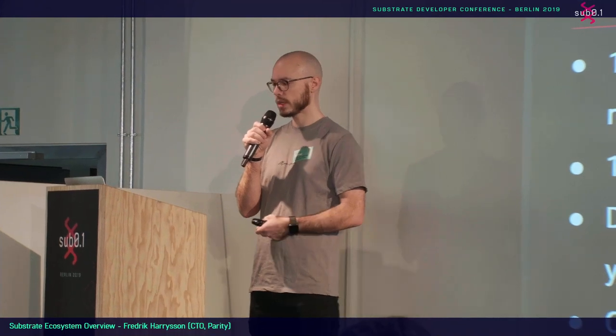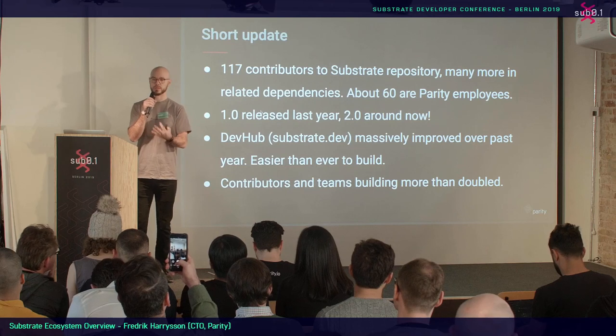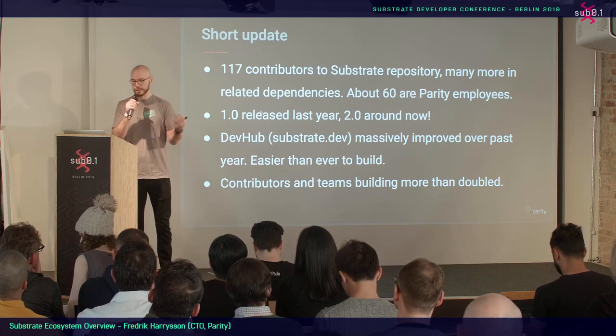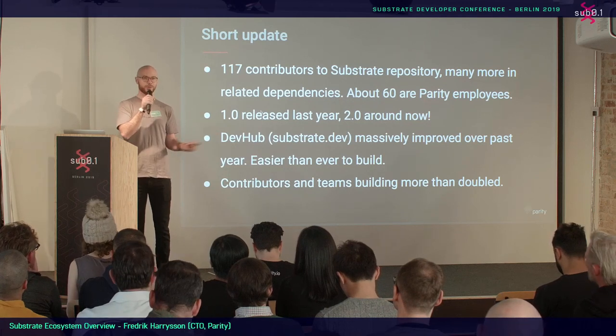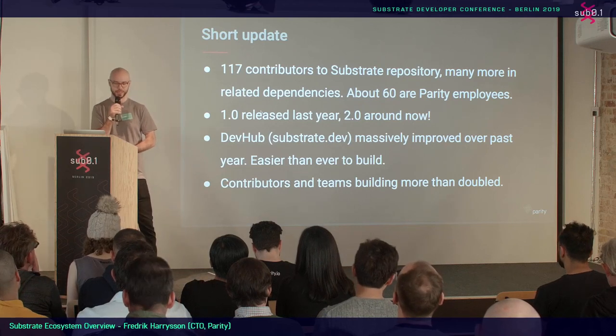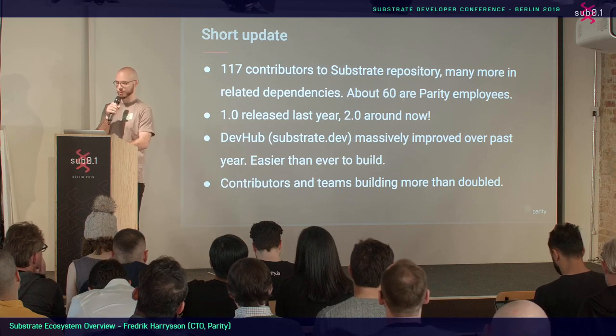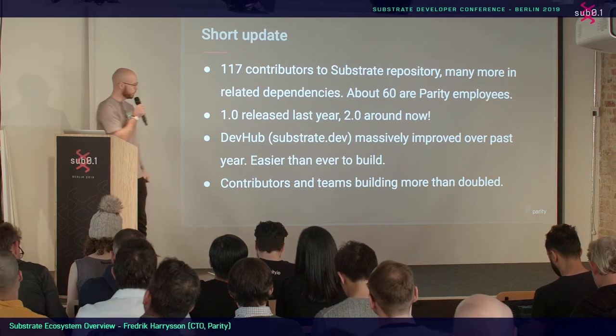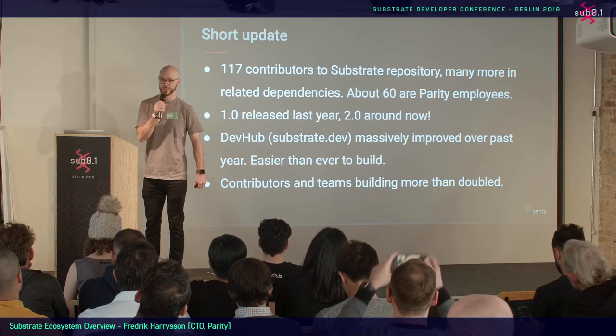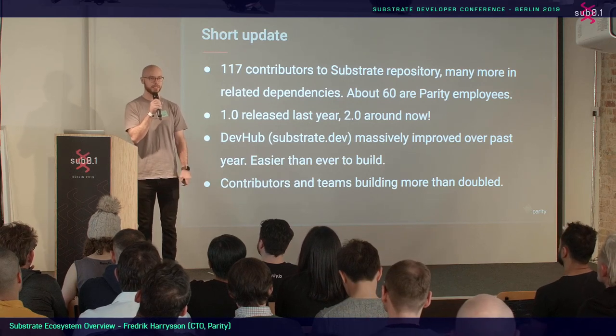There are many more repos — there's the wasmi repo, which is a super popular interpreter for wasm, and we have libraries across the board for everything you can do in the blockchain world. If you count all those things as well, the contributor number shoots up quite a lot more. Last year we released 1.0 around SubZero, and this year we're going to be releasing 2.0. There's obviously been a ton of work — as you saw in the video — over the past year. The dev hub at substrate.dev has massively improved, in much thanks to Sean and his crew.